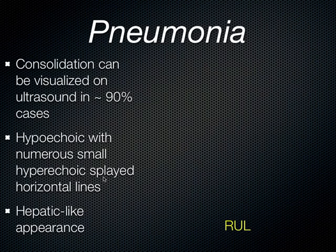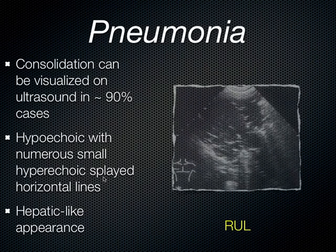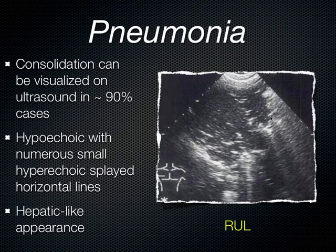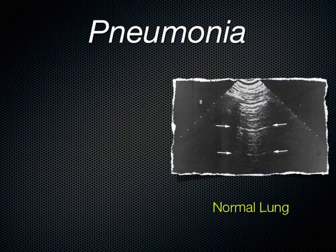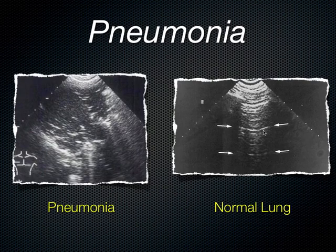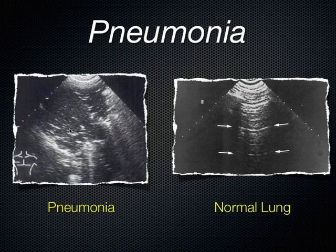A consolidation or pneumonia can be seen on ultrasound in up to 90% of cases. What you see is a hypoechoic area in the chest with numerous horizontal lines — hypoechoic horizontal lines seen throughout. When you look at this, it really does look like the liver. The term we sometimes use with ultrasound in pneumonia is hepatitization of the lung. You can see the difference between normal lung with repeating A-lines coming down from the pleural line — caused by the sound-air interface — versus when we lose that artifact and see a consolidation or hepatitization of the lung.